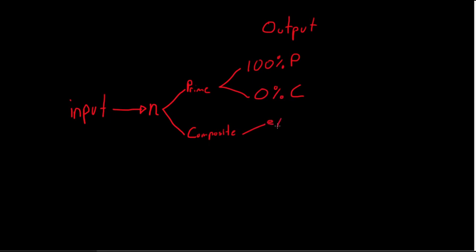However, if n is composite, then there will be some tiny chance of error e that it will label it prime, otherwise there is a 1 minus this tiny error probability that it will correctly identify it as composite.